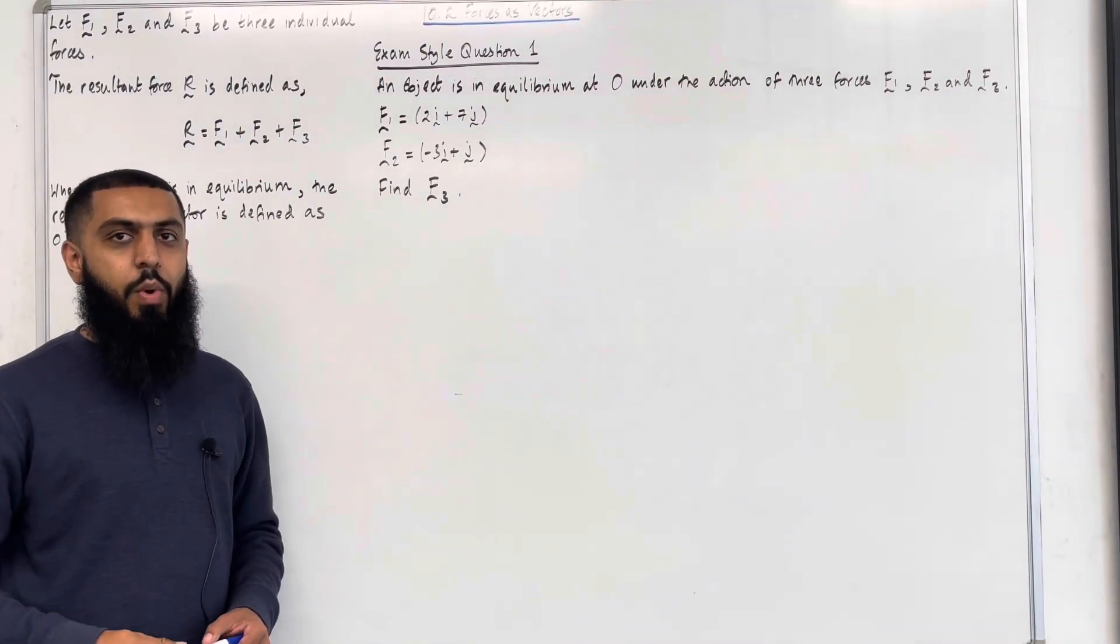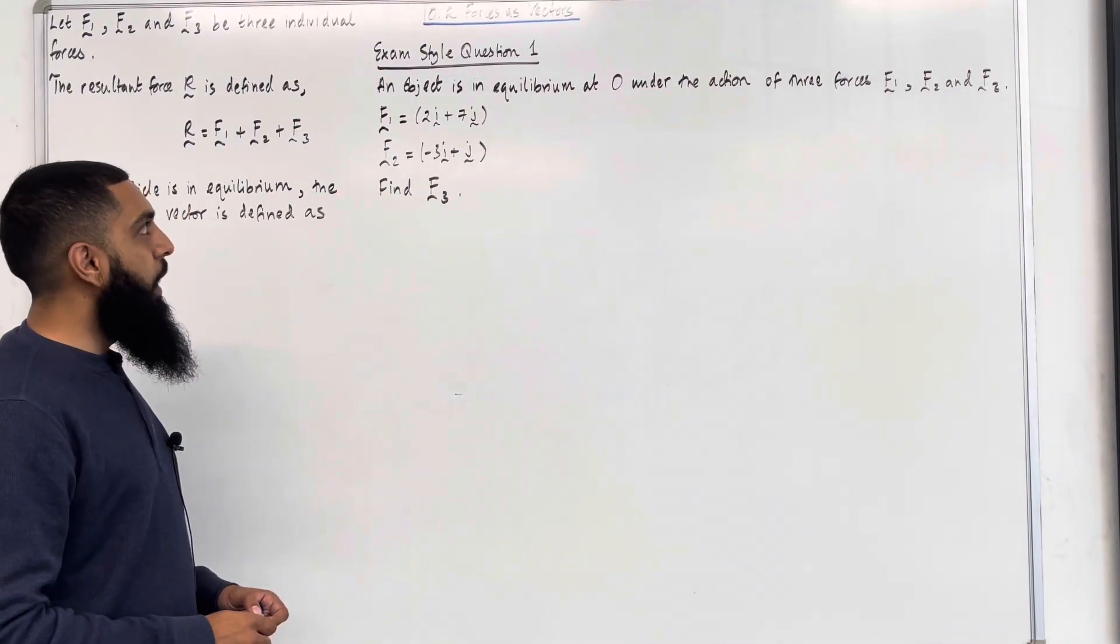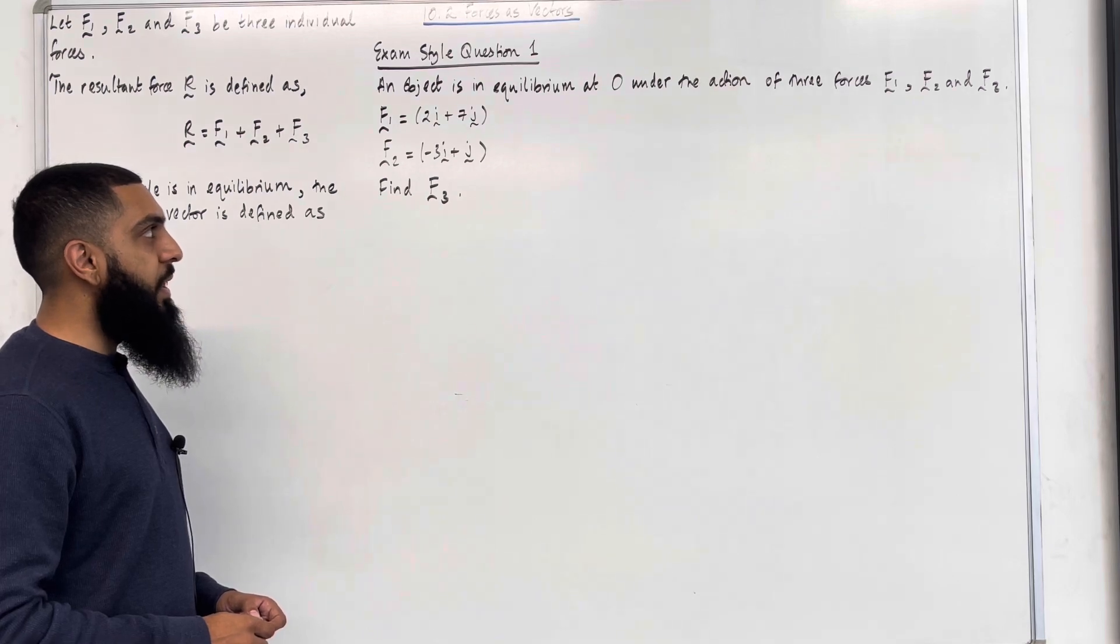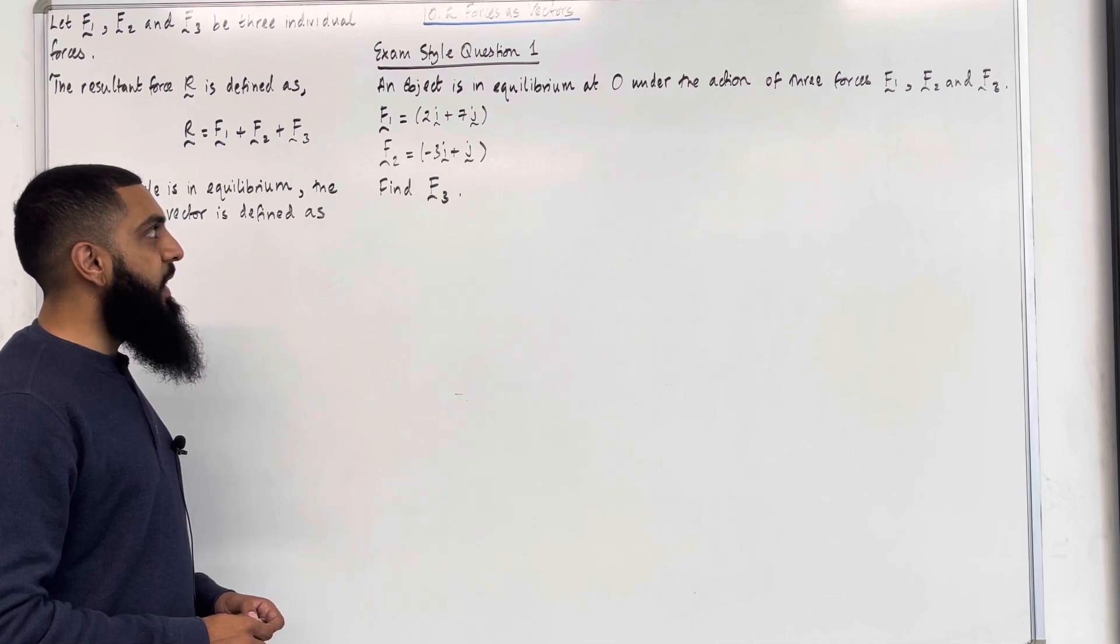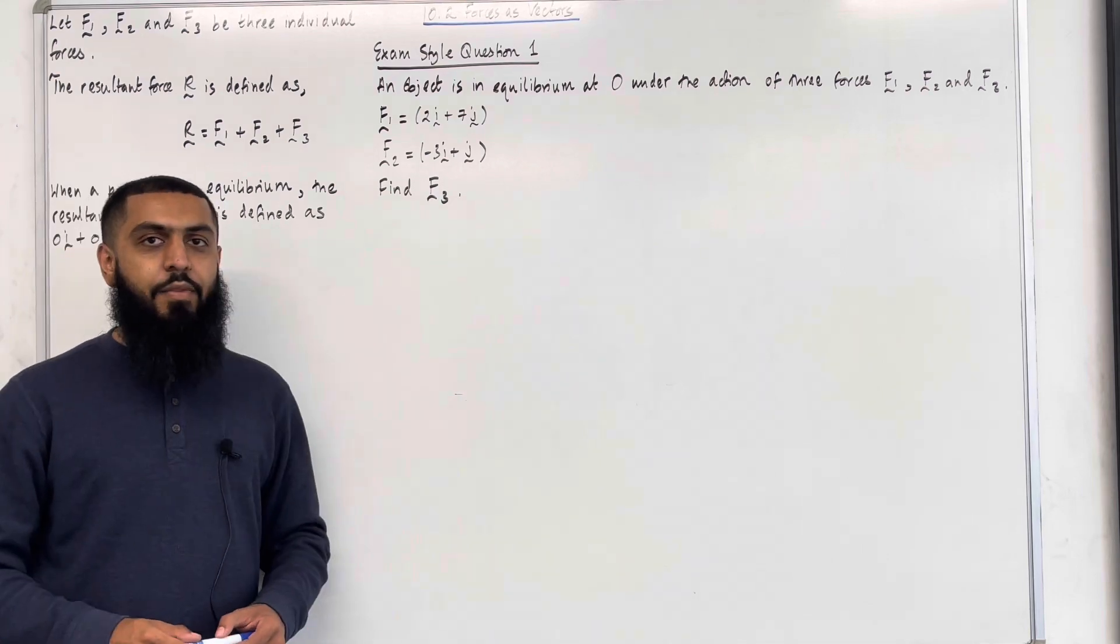Here is exam style question 1. An object is in equilibrium at all under the action of three forces F1, F2 and F3. F1 is equal to 2i plus 7j. F2 is equal to minus 3i plus j. Find F3. Let's have a look at the solution.